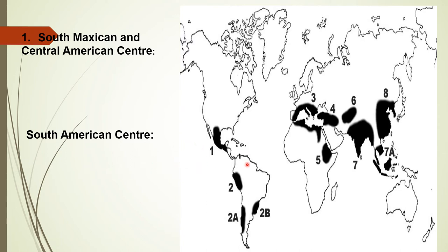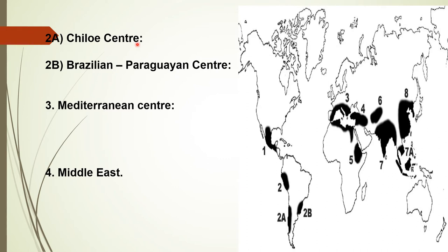The South American center includes the high mountain regions of Peru, Bolivia, and Ecuador. The crops which originated in this center are different species of potato, grains, legumes like maize, lima bean, and peanut, vegetable crops like tomato, pumpkin, ground cherry, and pepper, fiber plants like Egyptian cotton. The Chiloe center is the center of common potato. The Brazilian-Paraguayan center is the origin of cassava, peanut, rubber tree, pineapple, Brazil nut, and cashew.